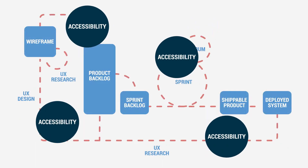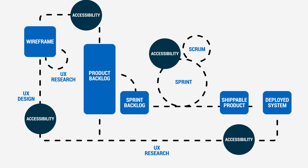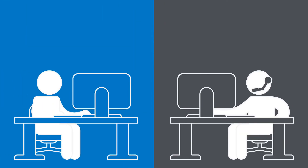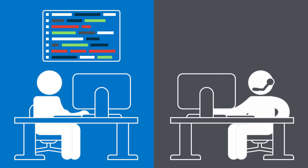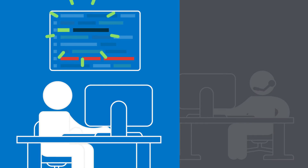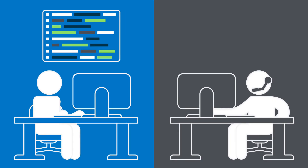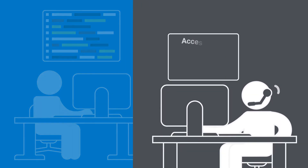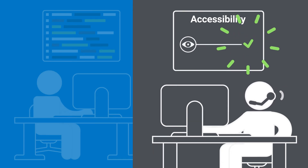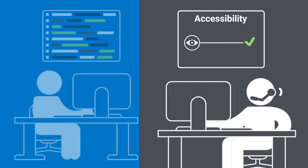There's only one way to avoid this: test for accessibility throughout your development process. Development teams that include accessibility checks in their regular testing can catch and fix accessibility issues while they code, instead of wasting time filing bugs for simple issues. This frees accessibility specialists to focus on the remaining complex issues that require manual testing during QA.